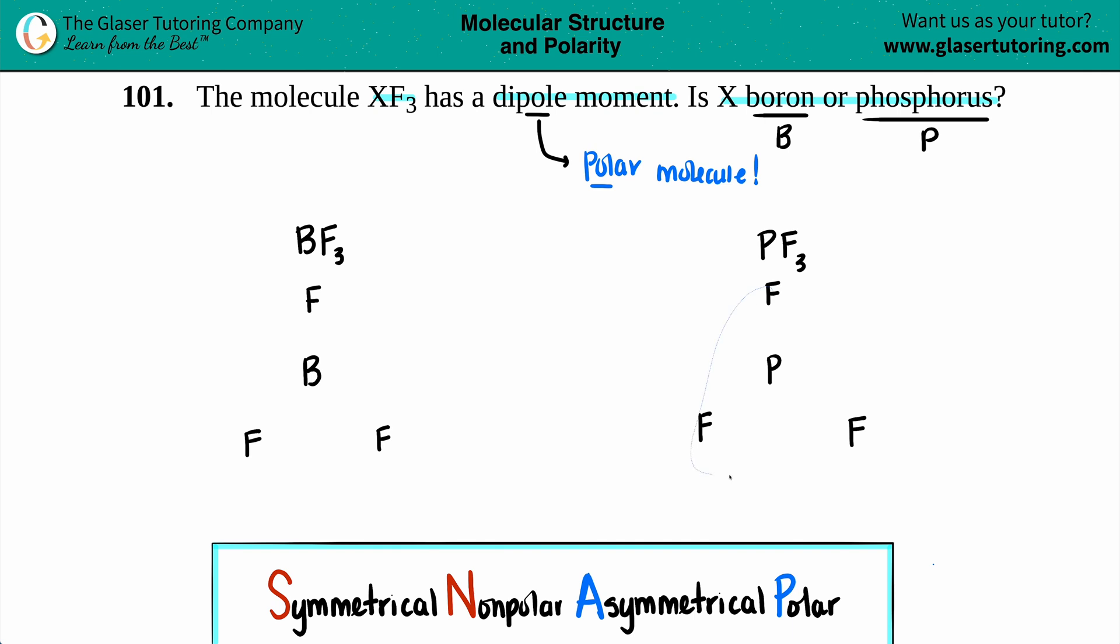Drawing Lewis structures, you don't really have to get the bond angles correct. All you got to do is just make sure that you have the correct connections.